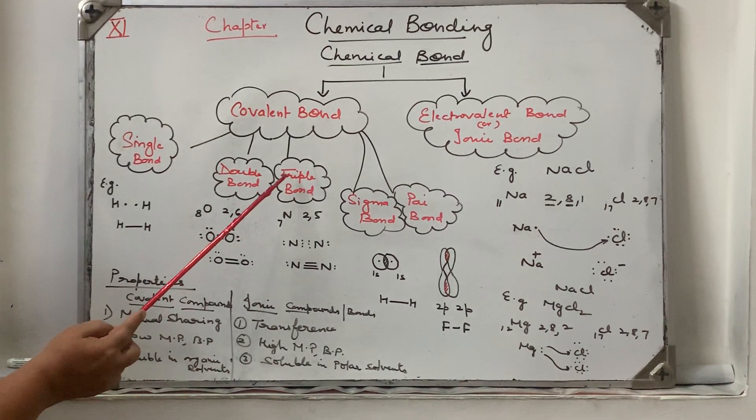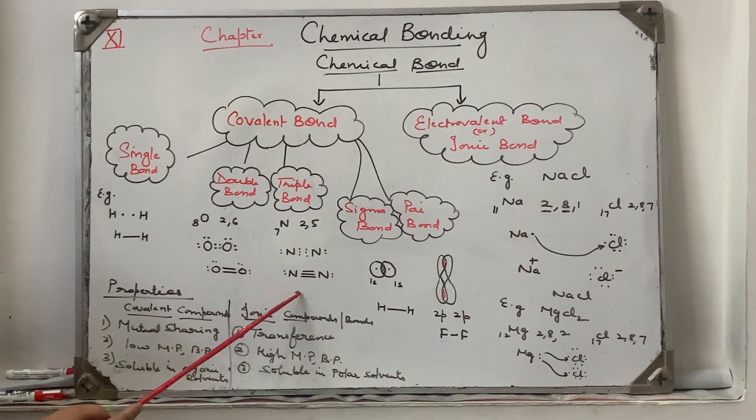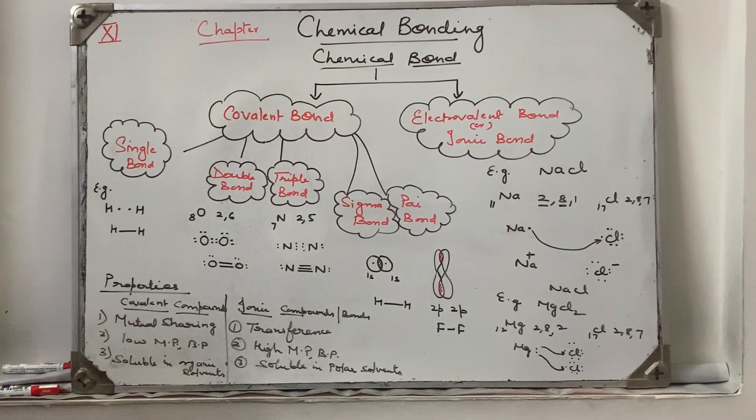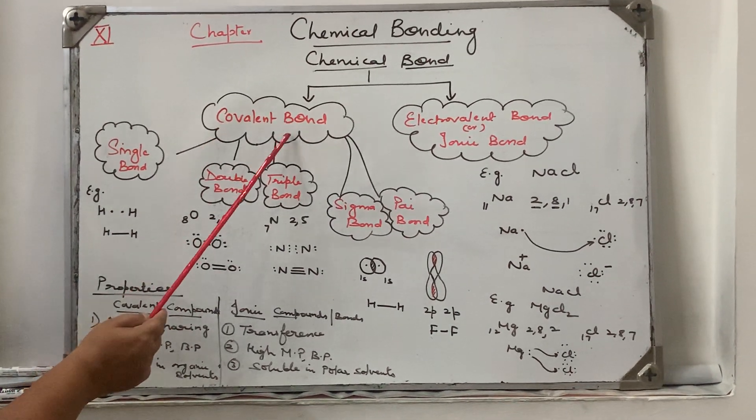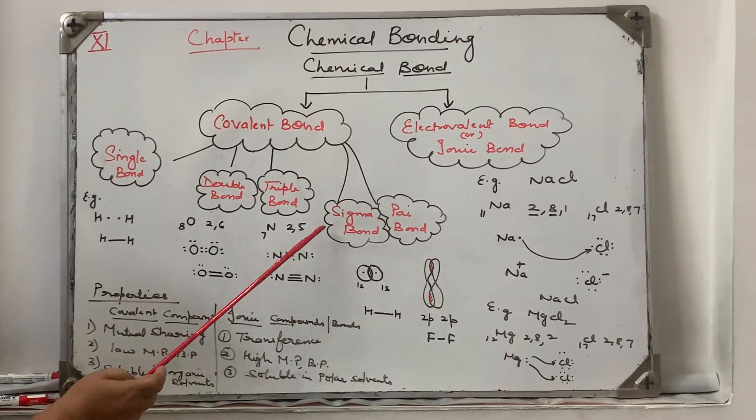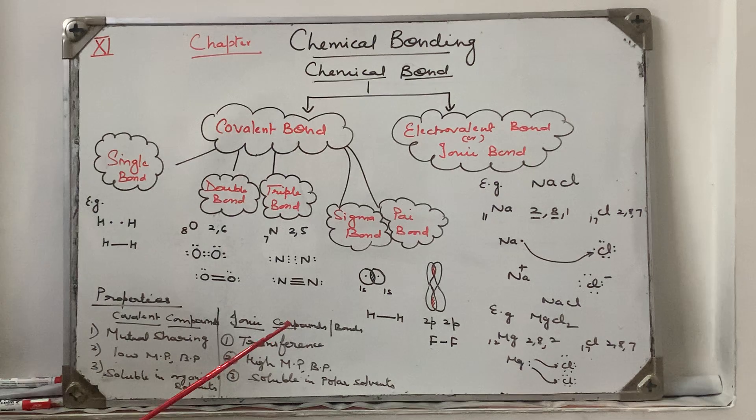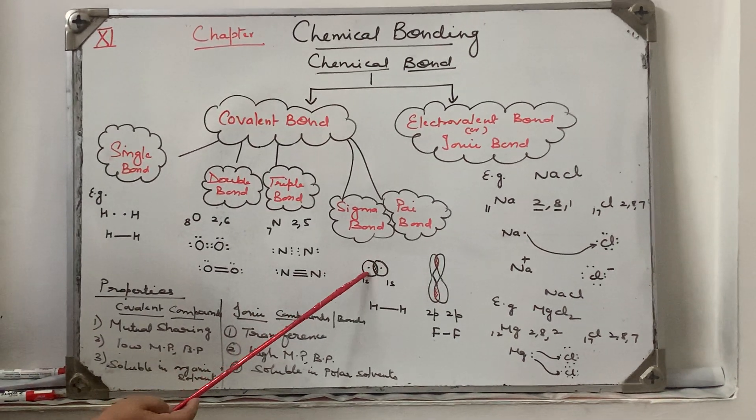In this way, nitrogen is short of three electrons, so a triple bond is formed. Depending on the extent of overlapping, covalent bonds can be divided into two types: sigma bond and pi bond. Sigma bond is formed by s orbital or pz orbital. The extent of overlapping is more along the internuclear axis, so this is a stronger bond.